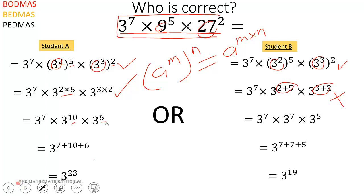So the next thing you have to do is use this property a exponent m exponent n is equal to a exponent m plus n. So if you pick this you're going to get 3 exponent 10 plus 6 which will give you 3 exponent 16.